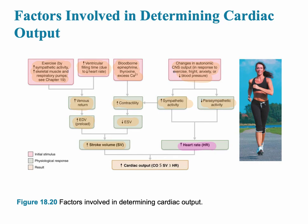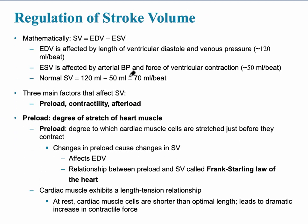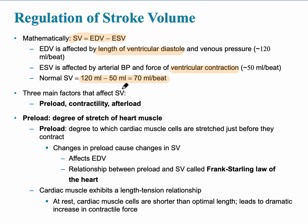Looking more closely at stroke volume: mathematically, stroke volume is calculated by starting with the EDV and subtracting the ESV. The EDV is affected by the length of the relaxation phase (ventricular diastole) and venous pressure. A normal stroke volume is about 70 milliliters per beat: 120 ml EDV minus 50 ml ESV equals 70 ml stroke volume.